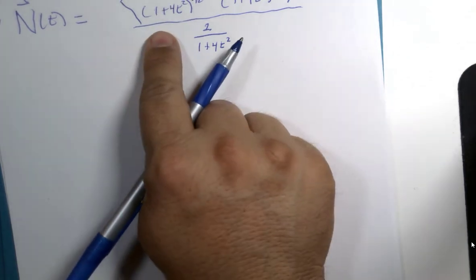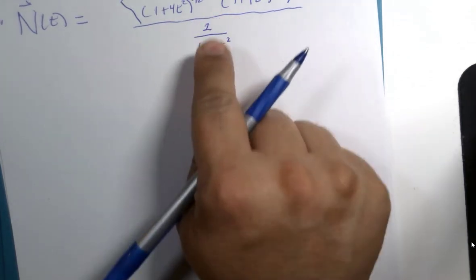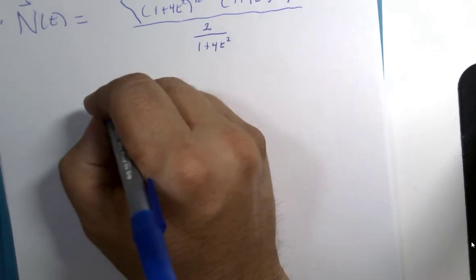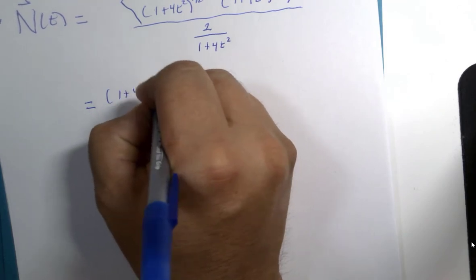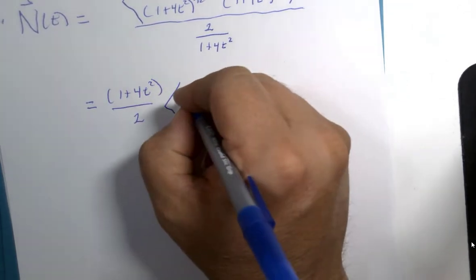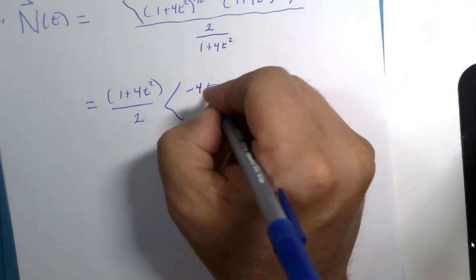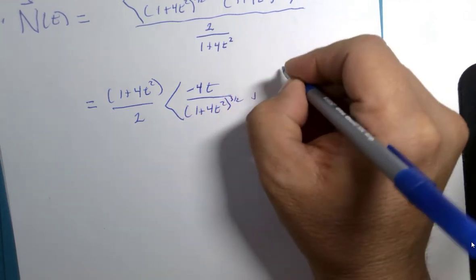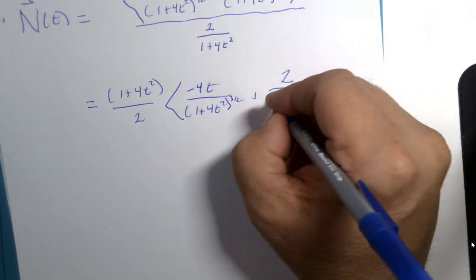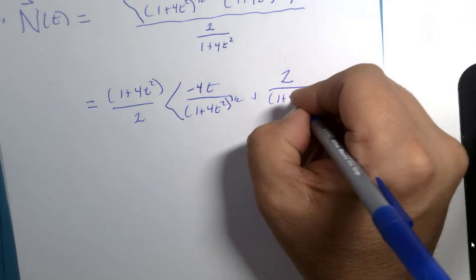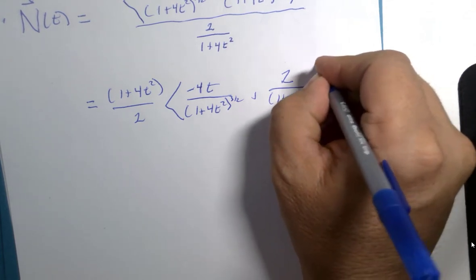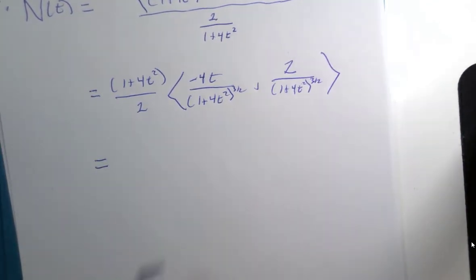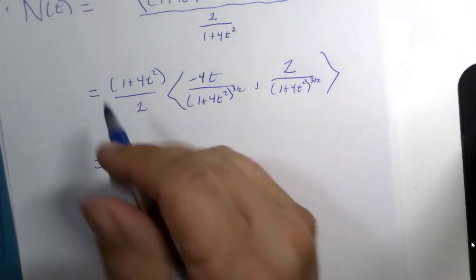So if we're going to take and multiply a vector by a scalar, I'm going to, instead of dividing it, I'm going to multiply by the reciprocal. Negative 4t over 1 plus 4t squared to the three halves power, 2 comma 1 plus 4t squared to the three halves power. And when you distribute this, half of 4 is 2, half of 2 is 1.